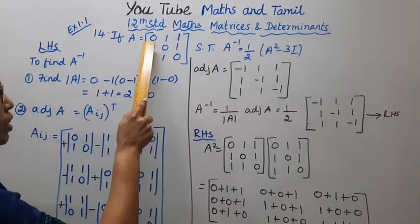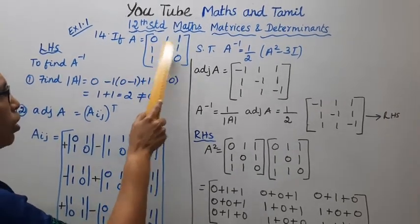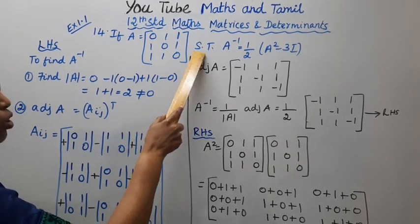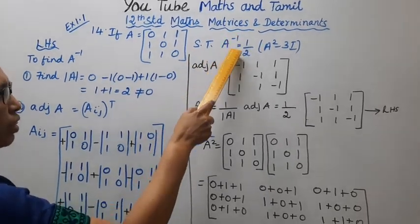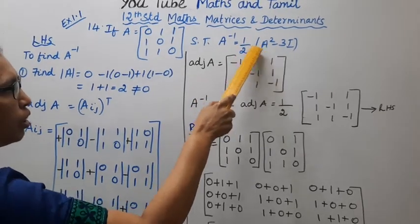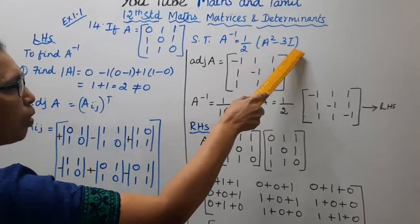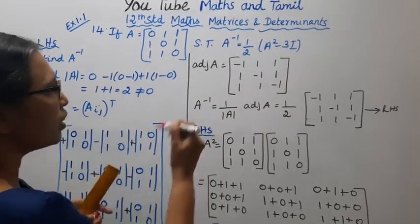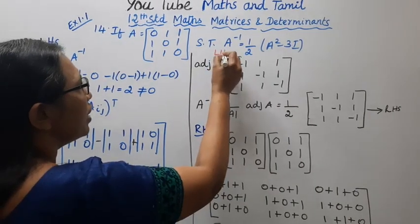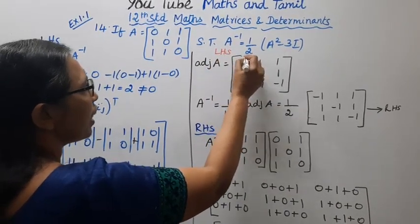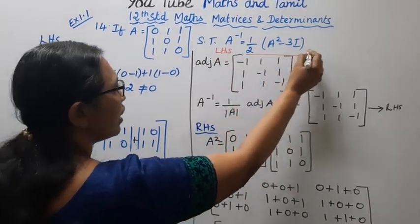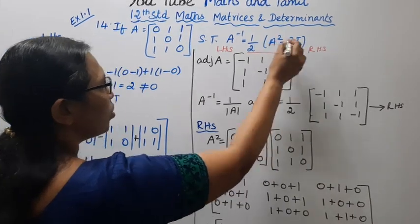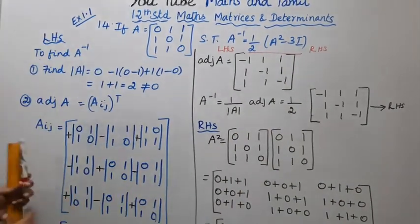If A is equal to the matrix [0,1,1; 1,0,1; 1,1,0], show that A inverse equals 1 by 2 into (A squared minus 3I). Left hand side: A inverse. Right hand side: 1 by 2 (A squared minus 3I).